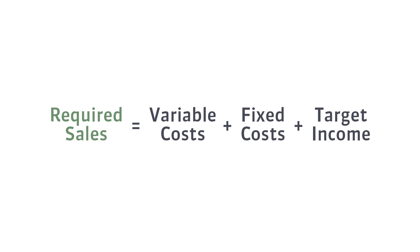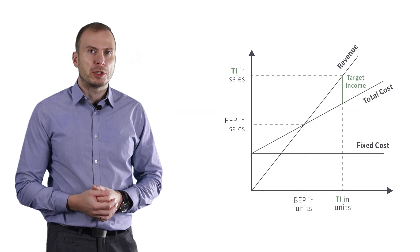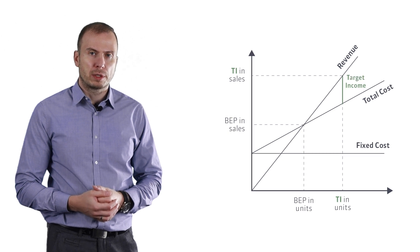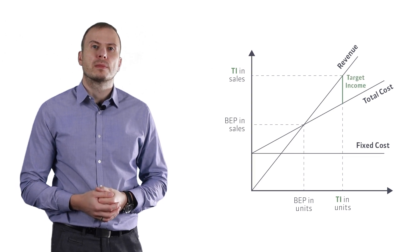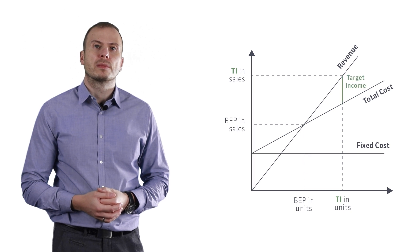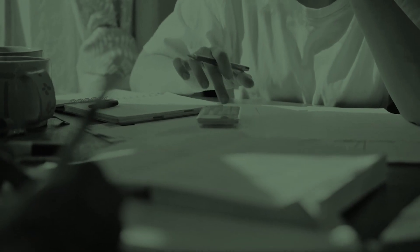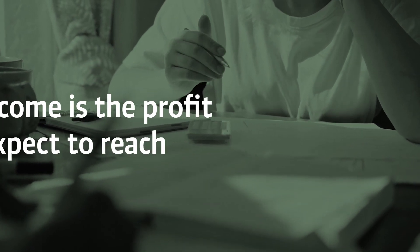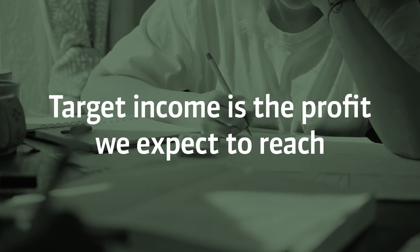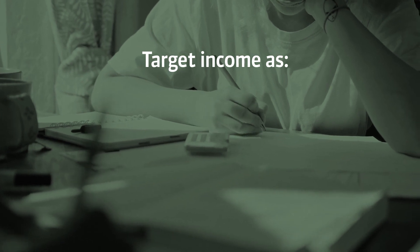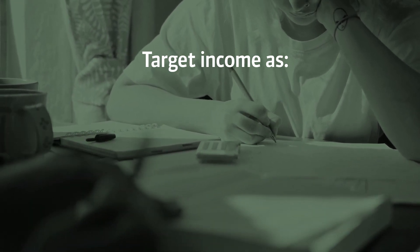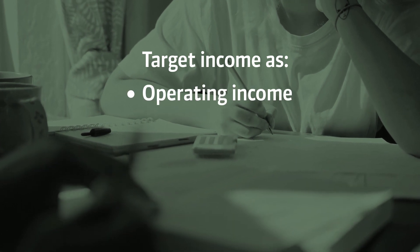The sales value for target income should look like this, and the graphic representation of the target income looks like this. Target income is the profit that the manager of the company expects to reach for a designated period. The word profit has a very broad meaning, so in this video I will focus on operating income and net income.